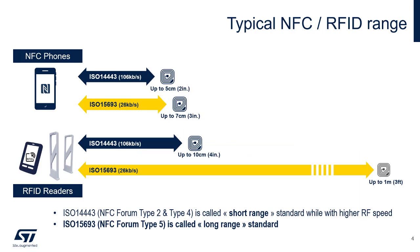A good way to differentiate these two protocols is to remember a trade-off between data rate and range. The ISO 14443 protocol supports a data rate of 106 kbps, where ISO 15693 supports 26 kbps. A typical application with a phone could achieve up to 5 cm with ISO 14443, and with similar design constraints, the same solution with ISO 15693 may achieve up to 7 cm.